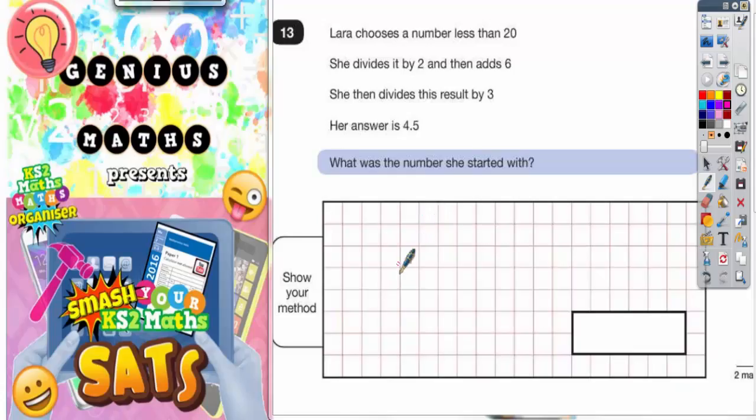Question 13. Laura chooses a number less than 20. She divides it by 2 and then adds 6. She then divides this result by 3. Her answer is 4.5. What number did she start with?